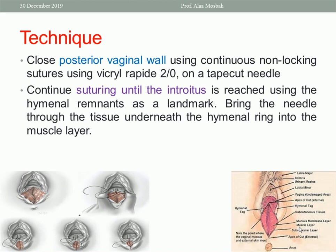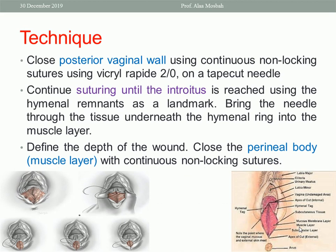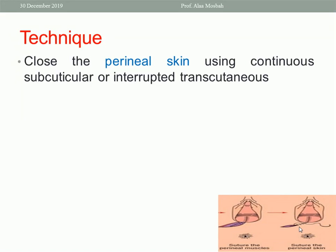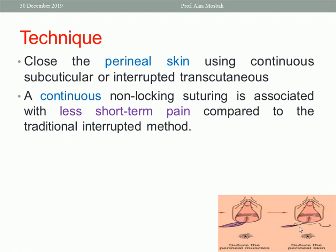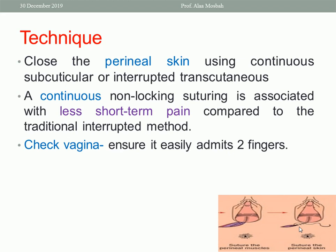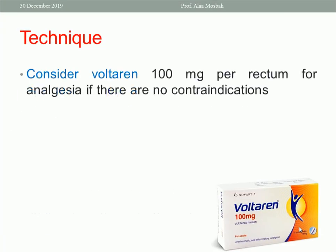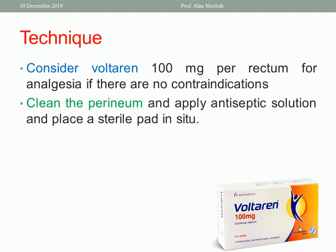Bring the needle through the tissue underneath the hymenal ring into the muscle layer, and define the depth of the wound. Close the perineal body muscles — bulbocavernosus and transverse perineal muscle — with continuous non-locking suture. Close the perineal skin using continuous subcuticular or interrupted transcutaneous suture. Check the vagina — ensure it admits two fingers so as not to close the introitus too much. Perform rectal examination to check for any sutures that may have penetrated the rectal mucosa. Give analgesia: diclofenac 100 mg per rectum if no contraindication, then clean the perineum and apply antiseptic solution.